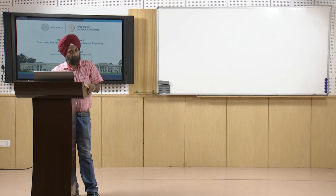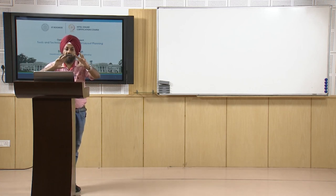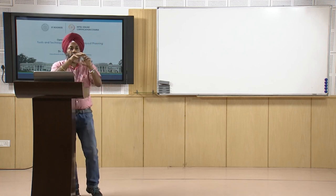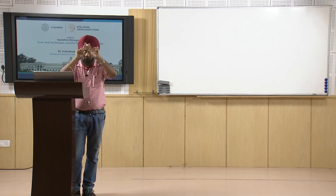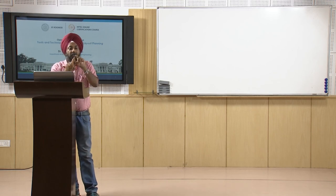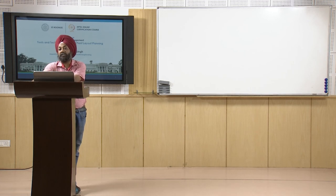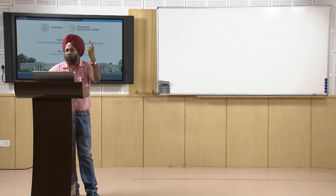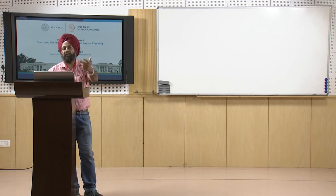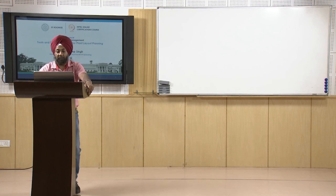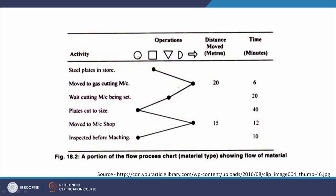Sometimes a combination of symbols is also used — for example, when operation and inspection happen at the same point, we combine a circle inside a square. To recap, the five symbols are: operation, transportation, delay, storage, and inspection.